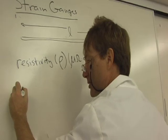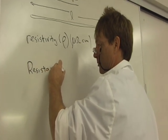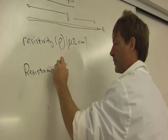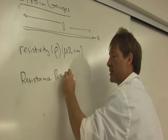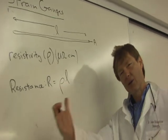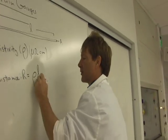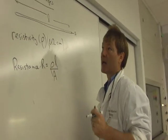Now, the resistance of the wire is given by the resistivity. The more resistivity, the more resistance it has, times the length of the wire. The longer the wire is, the more resistance. Divided by the cross-sectional area of the wire.